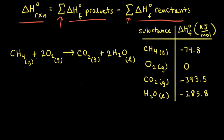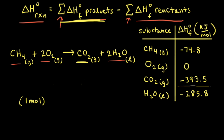Let's say our goal is to find the standard change in enthalpy for the following reaction: one mole of methane reacting with two moles of oxygen to form one mole of carbon dioxide and two moles of water. The first thing we need to do is sum all the standard enthalpies of formation of the products. Looking at our two products, we'll start with one mole of carbon dioxide.